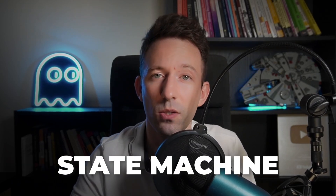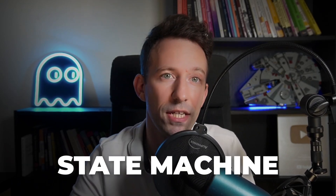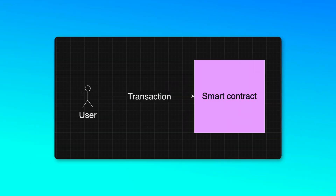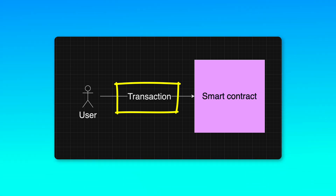A smart contract is what we call a state machine. By default, nothing is happening — the smart contract is sleeping. The smart contract only wakes up when a transaction triggers it. It runs a transaction which may or may not update its state, and then it sleeps again.